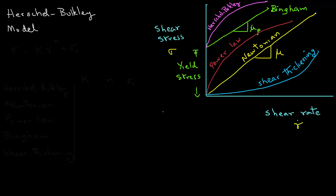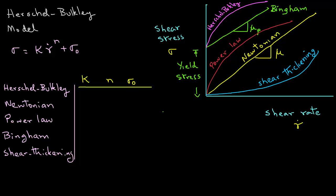So if we make a table where we have k for consistency coefficient, n for flow behavior index, and sigma zero the yield stress at zero shear rate, and we list Herschel-Berkeley liquid, Newtonian liquids, Power Law, Bingham, and shear thickening,